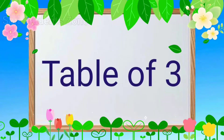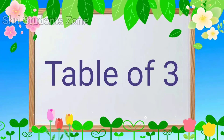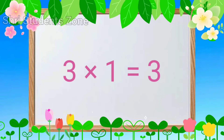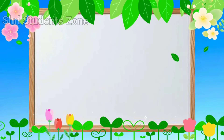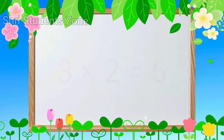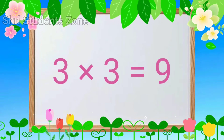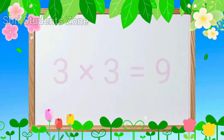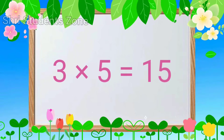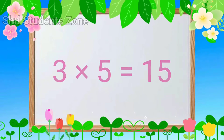Table of 3. 3-1s are 3, 3-2s are 6, 3-3s are 9, 3-4s are 12, 3-5s are 15.